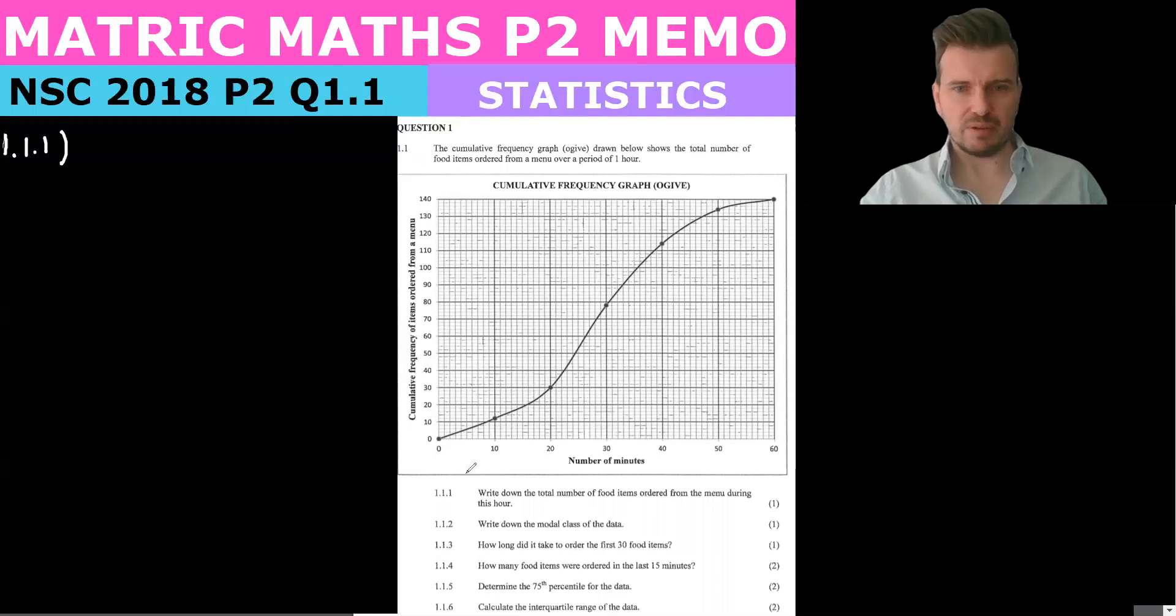We can see that with time the items increase. The first question says write down the number of food items from the menu during this hour. We see that after 10 minutes we've got 12 food items and after 20 minutes 30 items. So that means from 10 to 20 there was 18 items ordered. As we go up after an hour we see that a total number of items was 140.